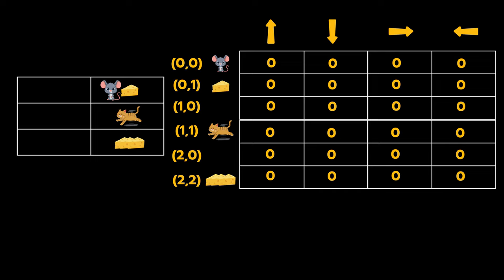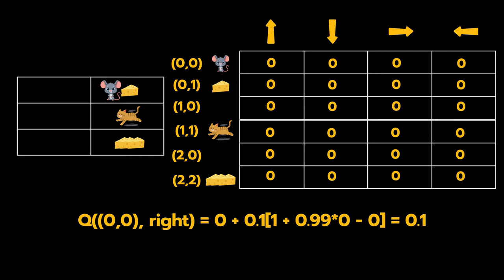So we'll update our estimation of the Q value at (0,0) given right as follows. So the former estimation of the Q value is 0, plus 0.1 which is the learning rate, into the immediate reward. So the immediate reward is +1 since he got to the small cheese.